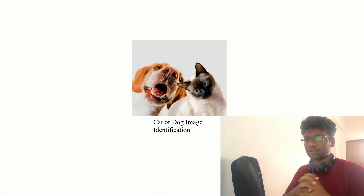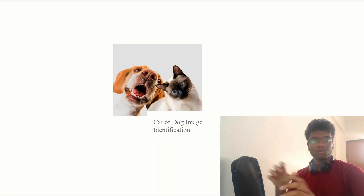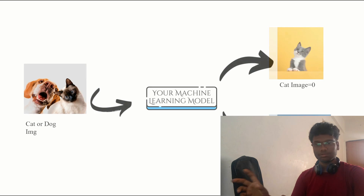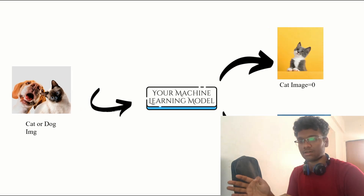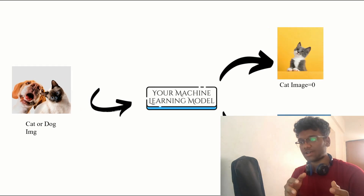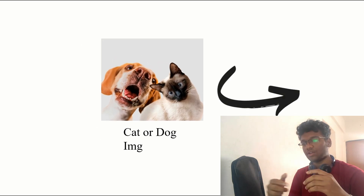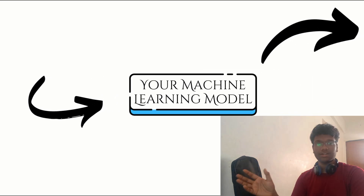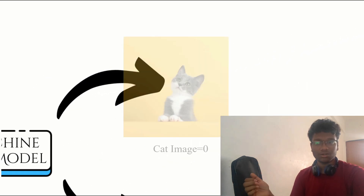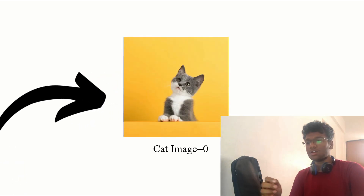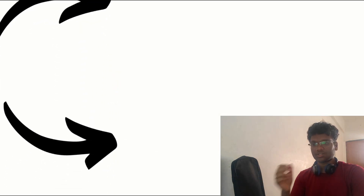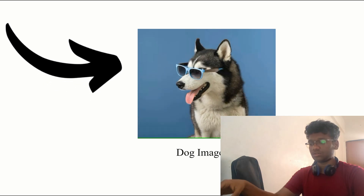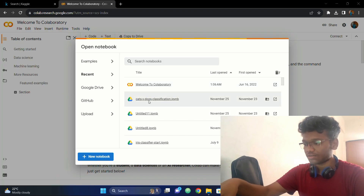Hello people, welcome back. We will be creating another small project this time on the concepts of deep learning. We are creating a cats versus dogs classifier, or say identifier. When you give an input image of a cat or a dog, the project should identify whether it is a cat or a dog. We will be using Keras and CNN libraries. Let's initiate.